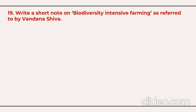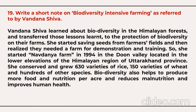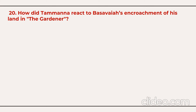Question number 19: write a short note on biodiversity and intensive farming as referred to by Vandana Shiva. Vandana Shiva learned about biodiversity in the Himalayan forest and transferred those lessons to the protection of biodiversity on farms. She started saving seeds from farmers' fields and then realized they needed a demonstration farm. She started the Navdanya farm in 1994 in the Doon Valley in the lower Himalayan region of Uttarakhand. She conserved and grew 630 varieties of rice, 150 varieties of wheat, and hundreds of other species. Biodiversity helps produce more food and nutrition per acre, reduces malnutrition, and improves human health.